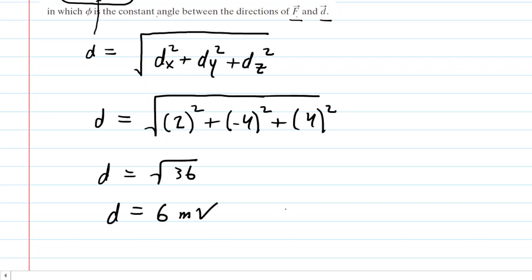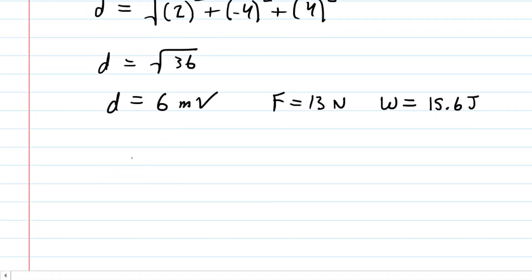We also have the force, whose magnitude was 13 newtons, and then the work for part A was positive 15.6 joules. Now, we take a look at that work equation: work equals magnitude of force times magnitude of displacement times the cosine of the angle between them.